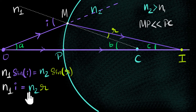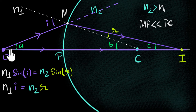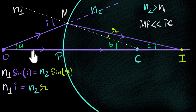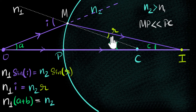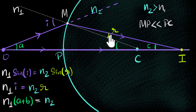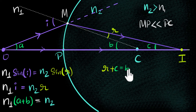Can you see a connection between angle i, a, and b? Angle i is the exterior angle of the large triangle, and a and b are the interior angles. The sum of interior angles equals the exterior angle, so i = a + b. Similarly, looking at the other big triangle, r and c are the interior angles, so r + c = b, which means r = b − c.